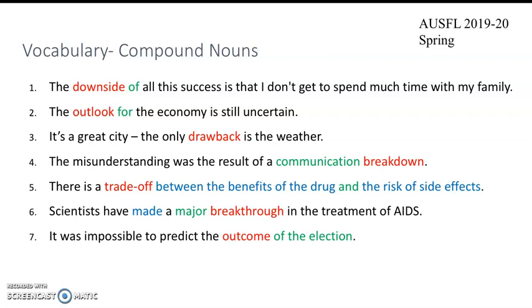Breakthrough means a discovery, but a big and important one. That's why it is often used with the adjectives major or big — for example, make a major breakthrough. Number seven and the last one is outcome. Outcome means the results of something, and it is commonly used with the word election. Outcome of the election means the results of the election.